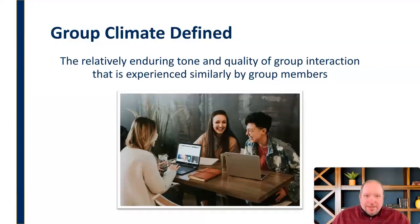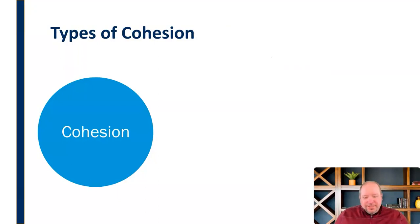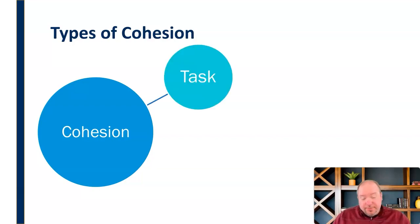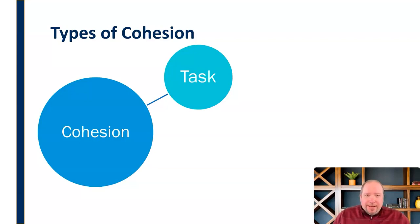We start by talking about something called cohesion — the stickiness, so to speak, of the group. How close is the group? How functional is the group? What level of cohesion and togetherness does this group have? There are two types of cohesion. There's task cohesion, which has to do with how well the group comes together in accomplishing their purpose and goal, and how effective they are at doing that as part of their task and the operation of the group in performing its function.